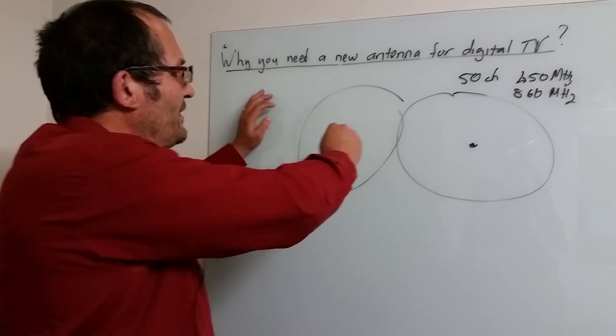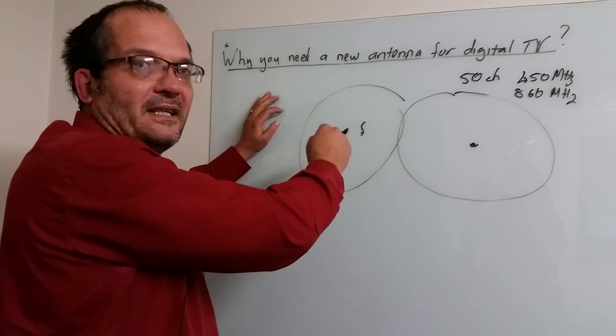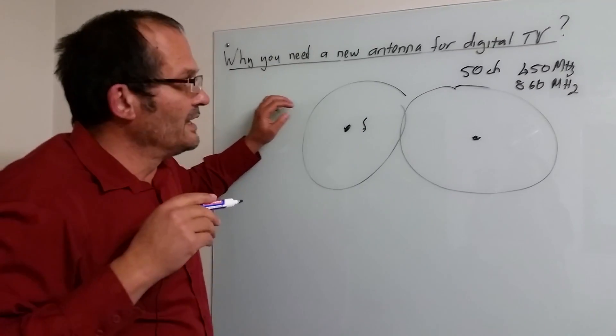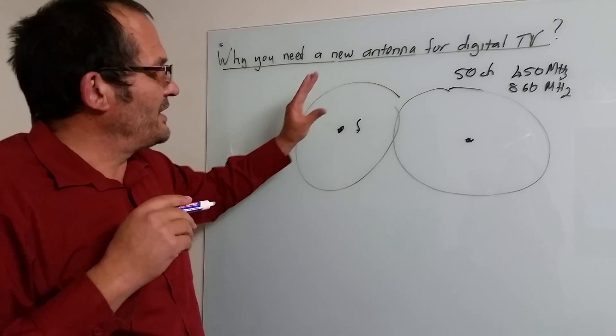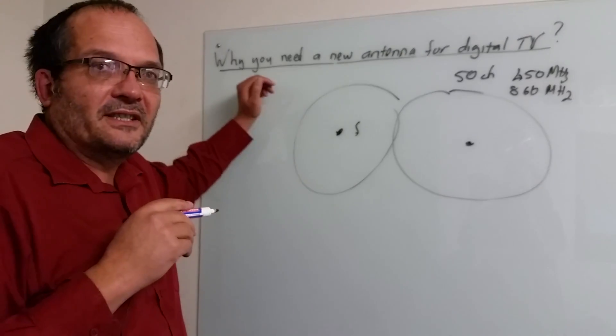And frequency change is certainly the biggest reason. So you may have had an antenna on your house that covered some part of the band because everything used to be there and that's now changed.